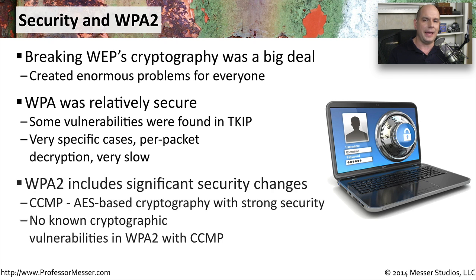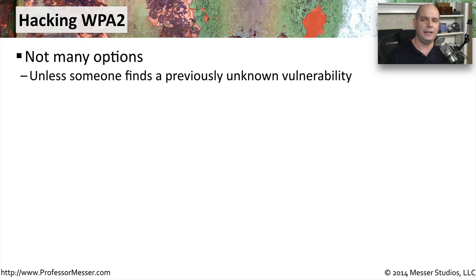When we released WPA2, it was a protocol that worked differently. TKIP was replaced with CCMP and AES, which were very strong protocols to be able to encrypt information. And there are, even to this day, no known cryptographic vulnerabilities in WPA2 when you're using that CCMP technology. Without any known cryptographic vulnerabilities, we have to use other methods to be able to crack or hack into a WPA2 network.